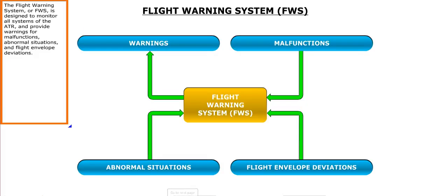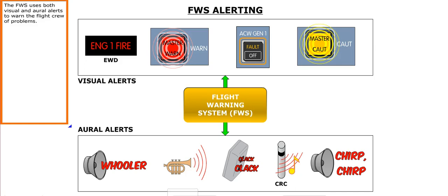The Flight Warning System, or FWS, is designed to monitor all systems of the ATR and provide warnings for malfunctions, abnormal situations, and flight envelope deviations. The FWS uses both visual and oral alerts to warn the flight crew of problems.